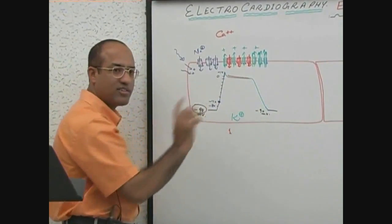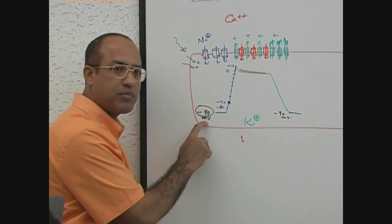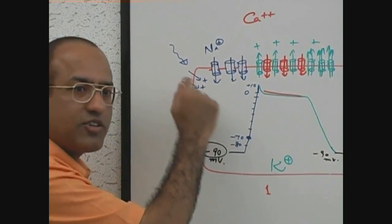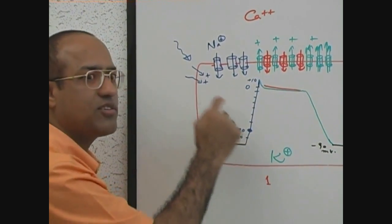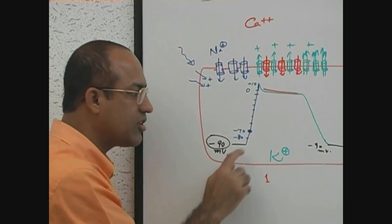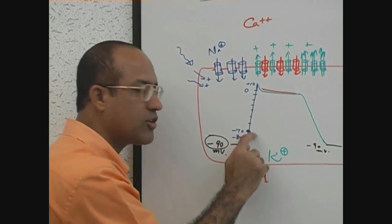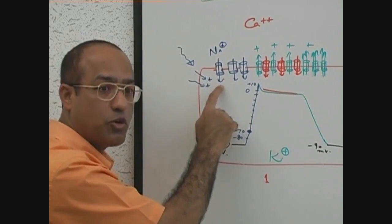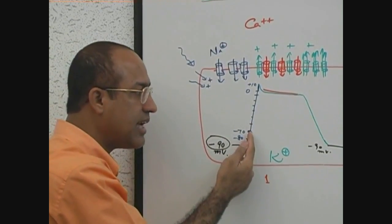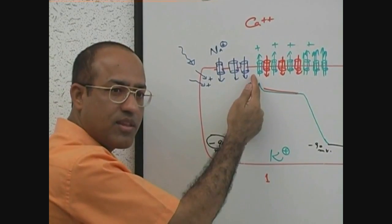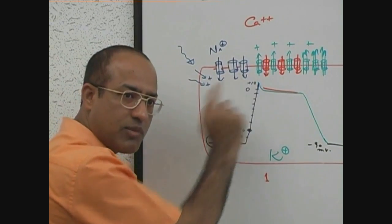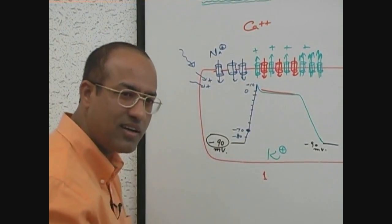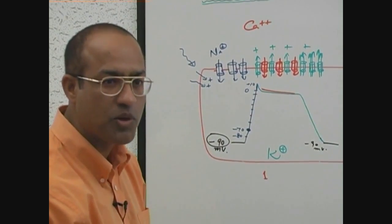Let's revise. This was a resting myocardial cell with a resting membrane potential of minus 90 mV. When it was appropriately stimulated, some cations trickled in. These cations took the resting membrane potential up to threshold potential. At threshold potential, voltage-gated sodium channels open, a lot of sodium comes in, and the potential goes towards the positive side — losing all electronegativity. This phenomenon is called depolarization.